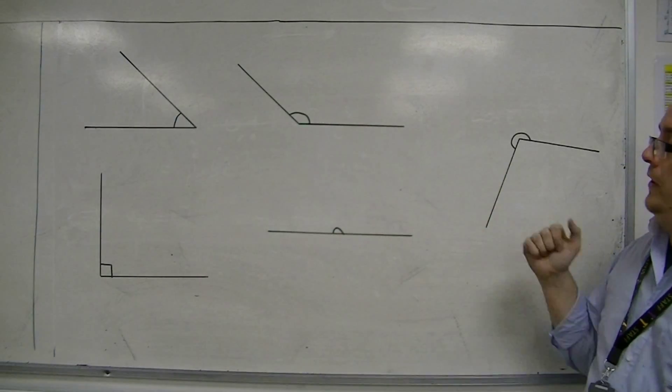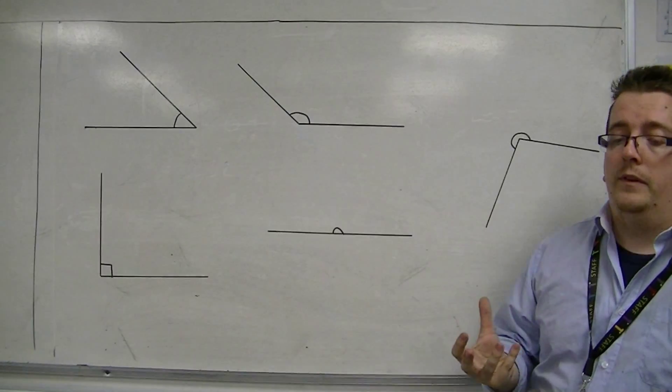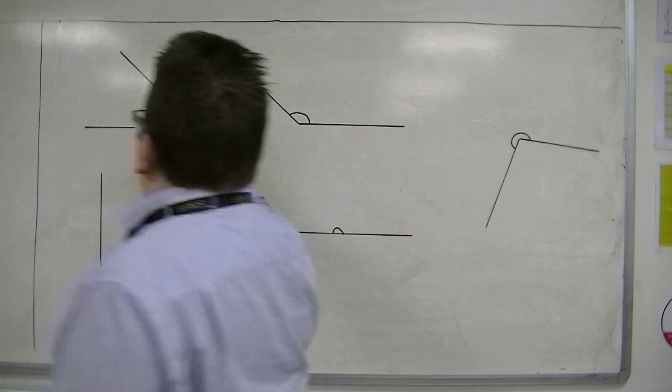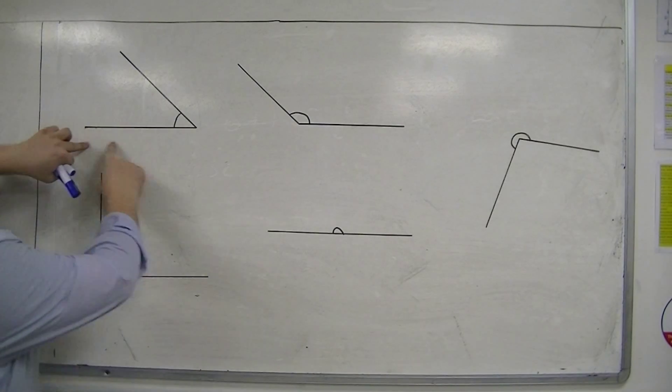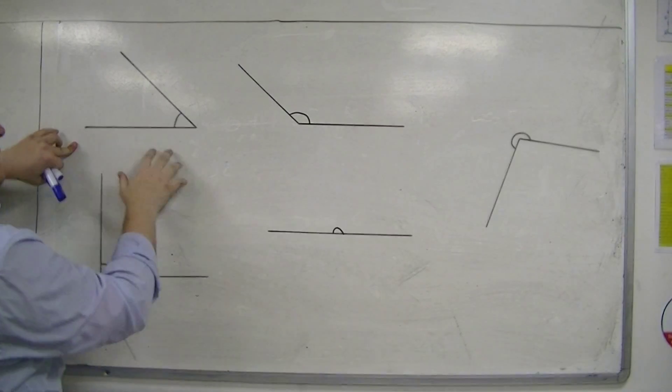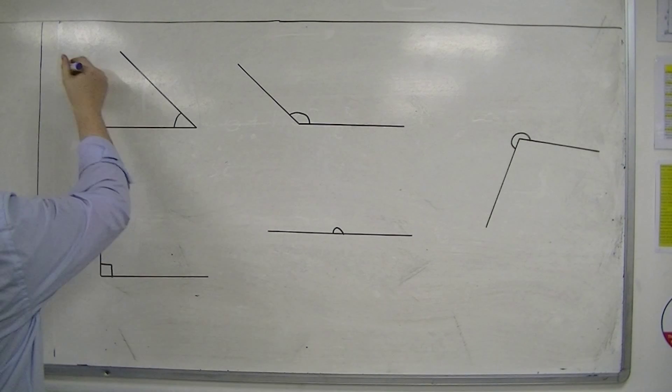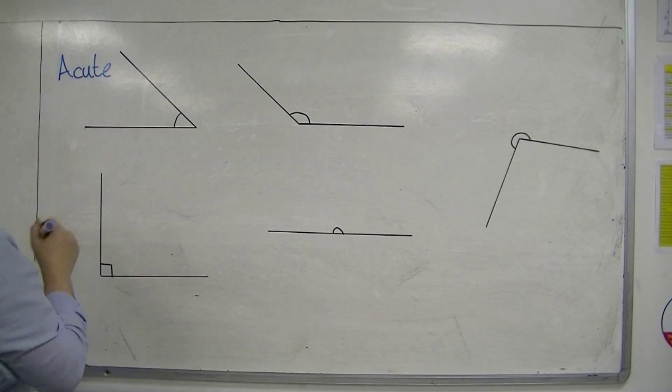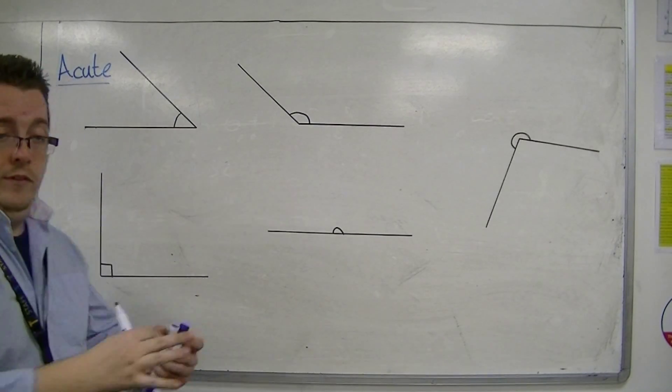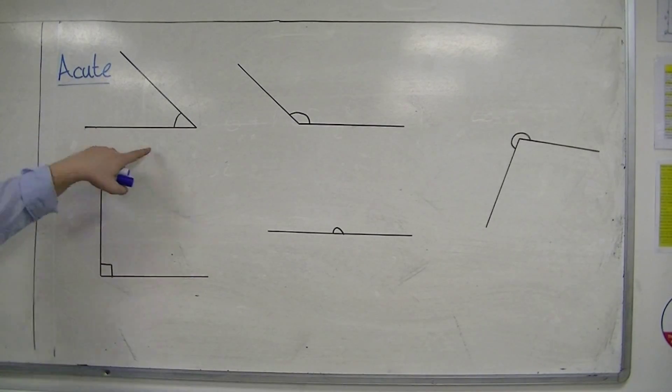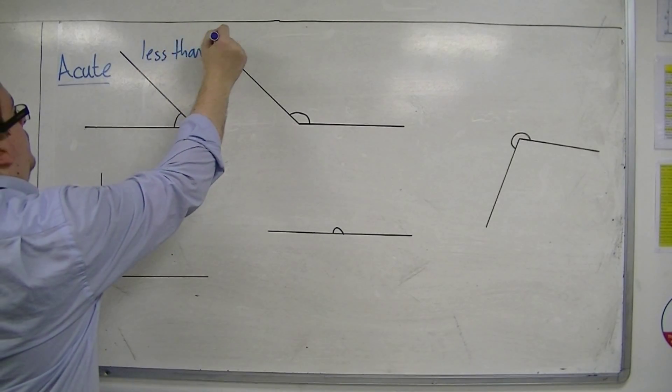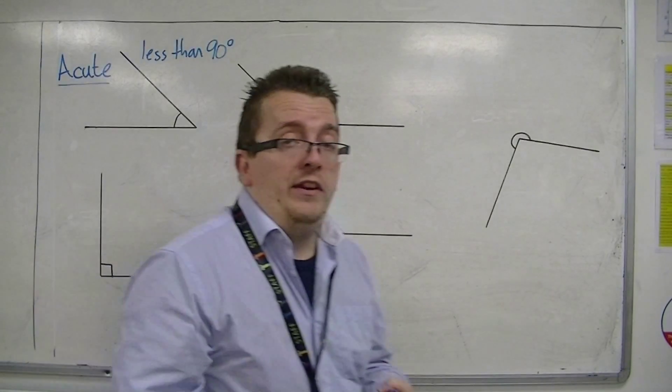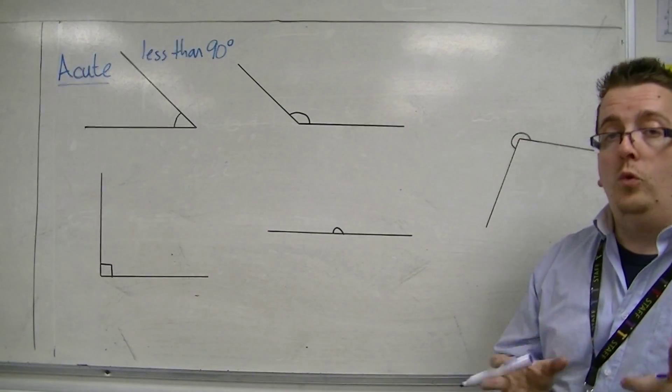These represent five different angles, and they're named. Each one has a specific name based on the size of the angle. This first one is known as an acute angle. This angle is acute. Some people like to think that it's nice and cute and small. Think of it that way. An acute angle is any angle that is less than 90 degrees. If you have an angle of 37 degrees, 62 degrees, 85 degrees, these are all acute.